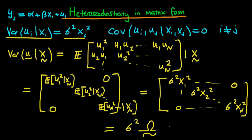Notice this is in a very similar form to the homoscedastic case, but the matrix Ω is not the identity matrix — the diagonal components aren't all equal to one. However, we can still write the heteroscedastic condition in a very simple form, and that's going to help us when we try to come up with BLUE estimators in the presence of heteroscedasticity.